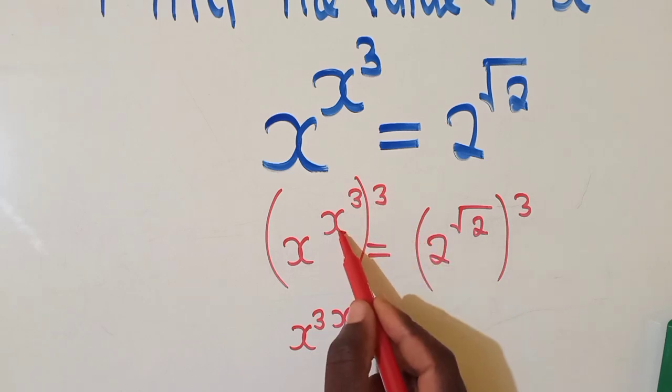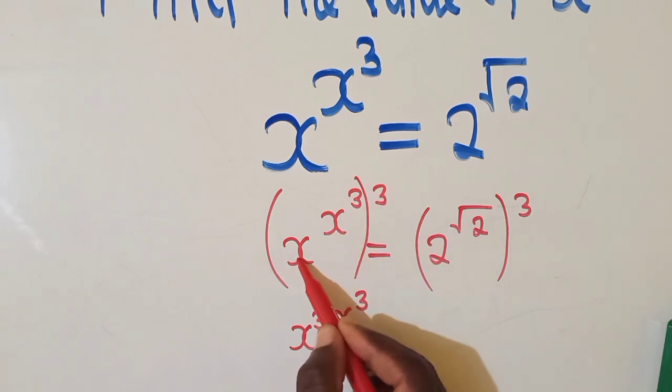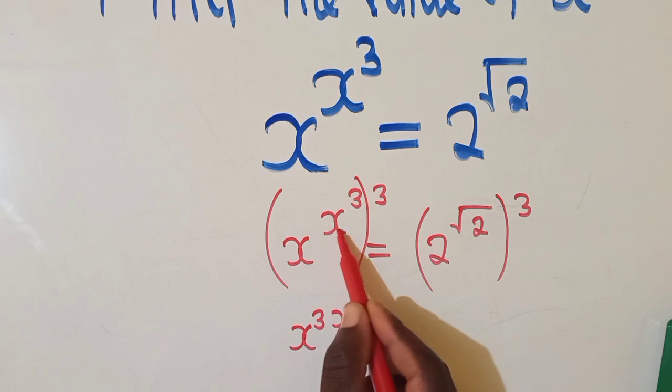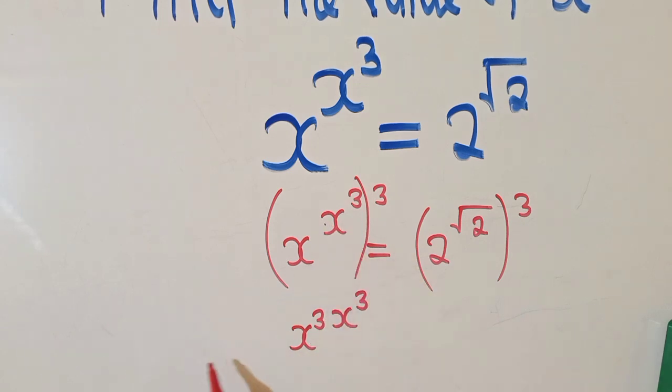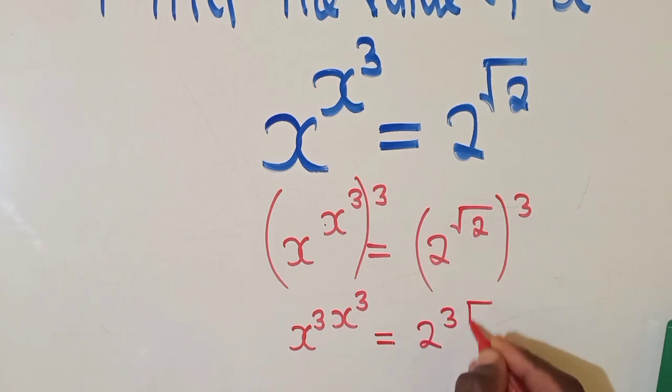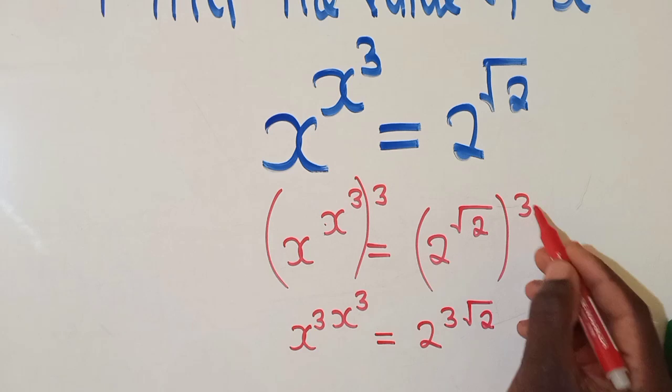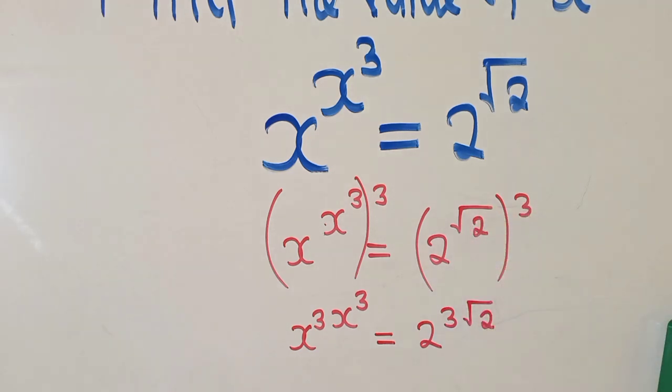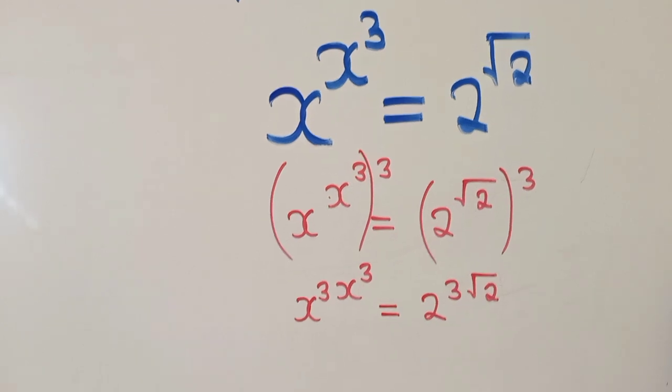In case you are wondering, I've just used the laws of indices. We know that the power which is right here will be multiplied by this power here. It will come in front here. It's equal to here: 2 power 3 root over 2.